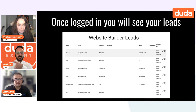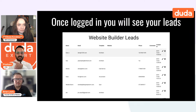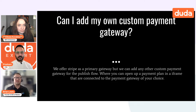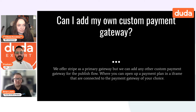Once you're logged into the leads page, you'll see each lead's name, email, template, website, phone number, any comments, and the date created. Now to the question: can I add my own custom payment gateway? Yes. What we've done is currently offer only Stripe, but any payment gateway you'd like can be connected. Within your Duda account in the publish flow, you can open up an iframe in a lightbox without publishing the site.